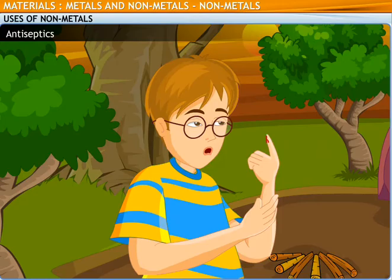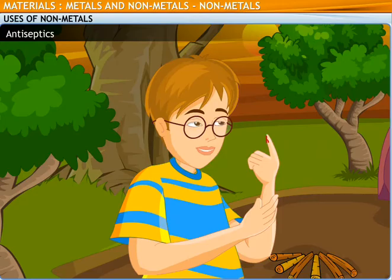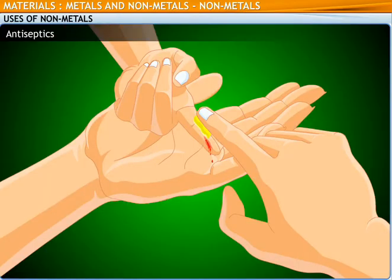Non-metals like boron, sulfur and nitrogen are used in making crackers. Ouch! I've cut my finger. Let me apply some antiseptic. Do you know antiseptics contain iodine, which is a non-metal?